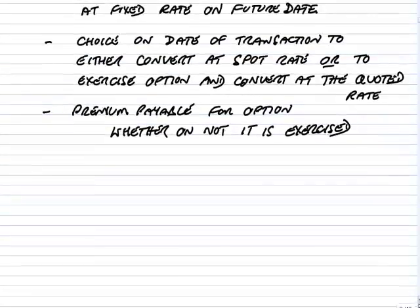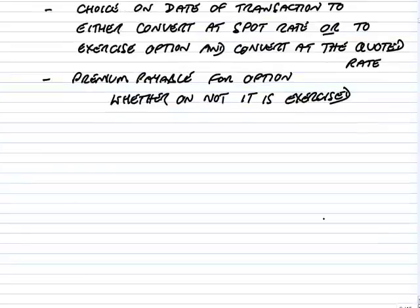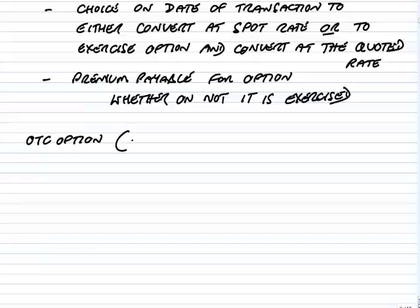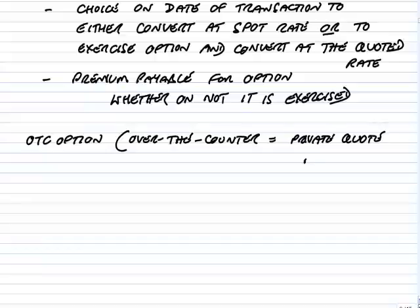Let me show you what I mean with a very simple example — an example of what's called an OTC option. OTC means over-the-counter, and effectively what we mean by over-the-counter is a private quote from the bank. Let me show you what I mean by looking at example 1 on page 97.